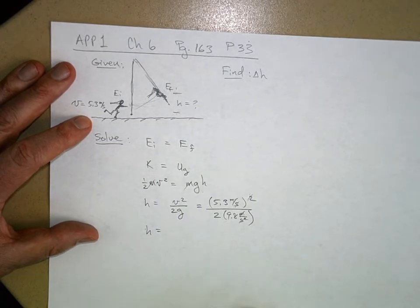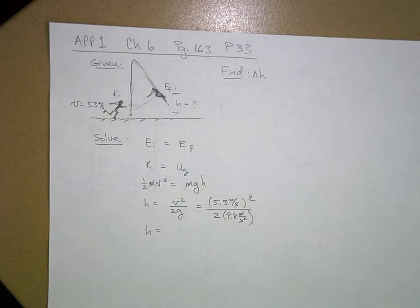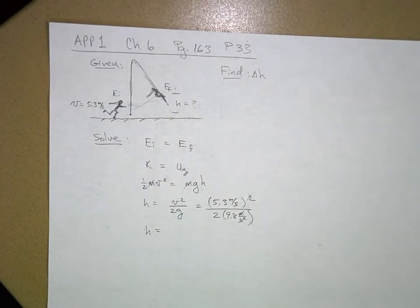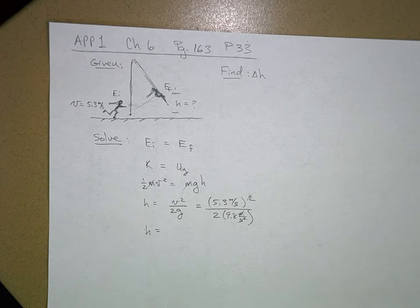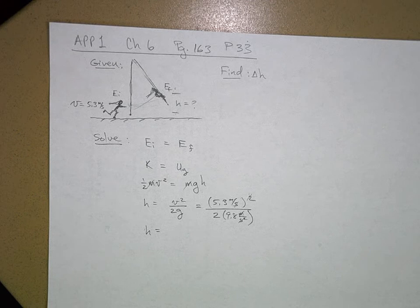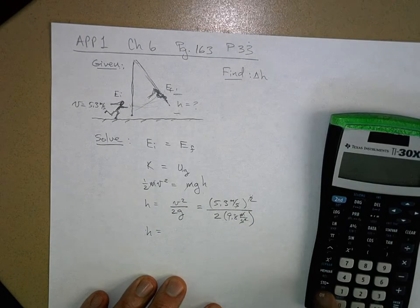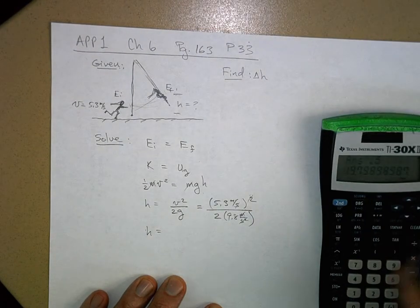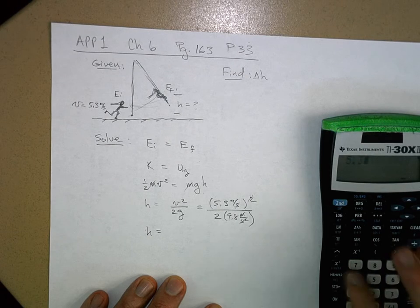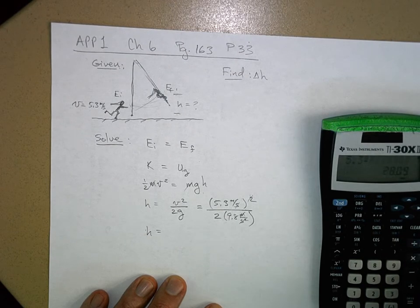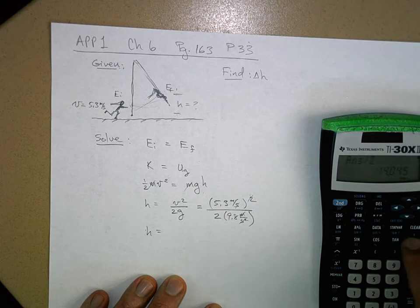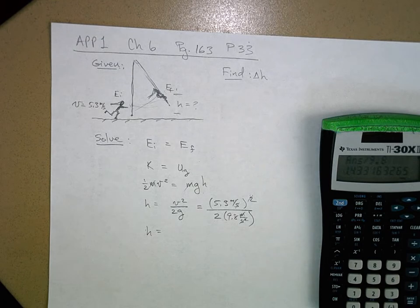And so my height above is, if I can find, who took my calculator? I have my calculator. All right. So 5.3 squared equals, and then I'm going to divide that by 2, and I'm going to divide that by 9.8, and I get 1.43.